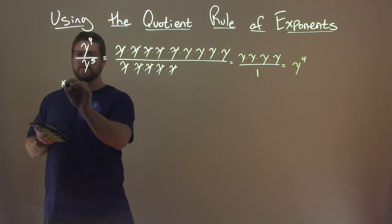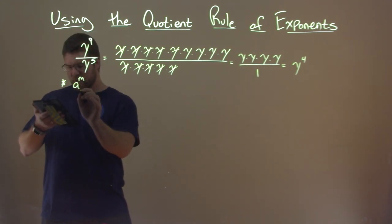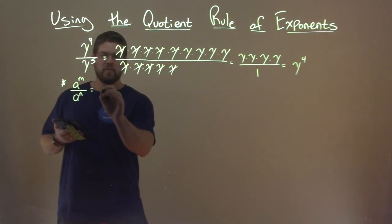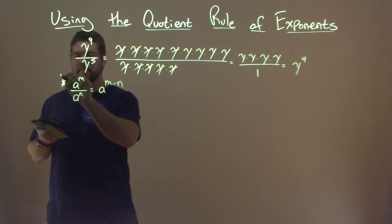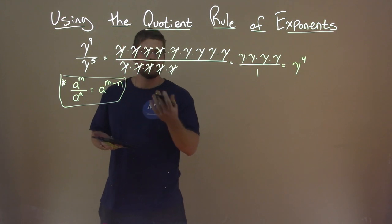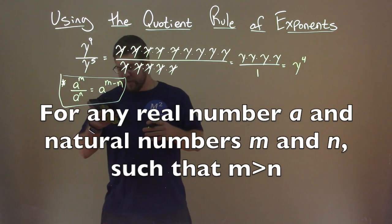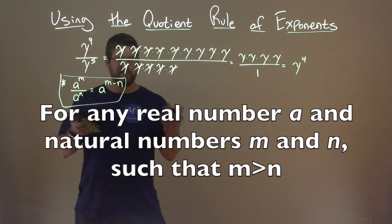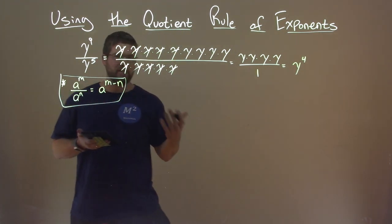The quotient rule tells us this. Given the same base, we're going to have a to the m power over a to the n power, the same base with division there. What we can do is just write this as a to the m minus n power. And that's our quotient rule really in a nutshell, which makes sense, right? 9 minus 5 is 4, and we had y to the fourth power. Now, they state this is for any real number a and natural numbers m and n, such that m has to be greater than n. The quotient rule of exponents states this. So, note that m has to be greater than n.